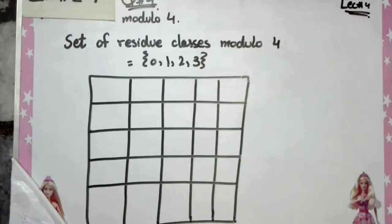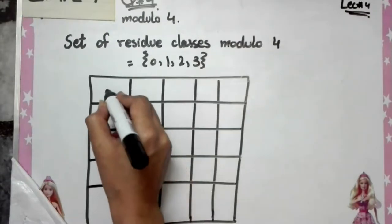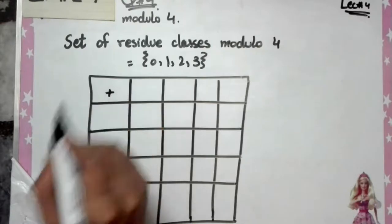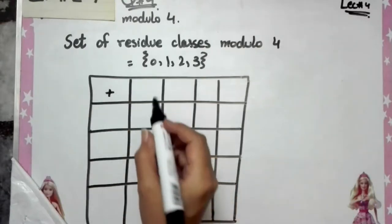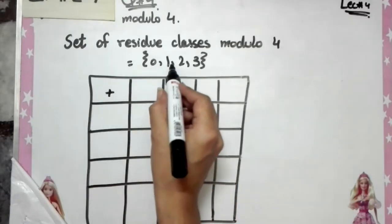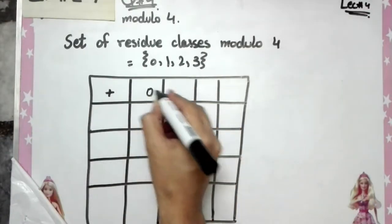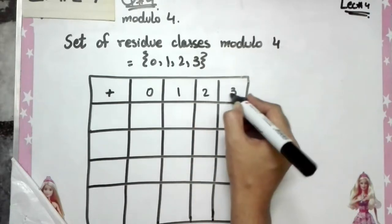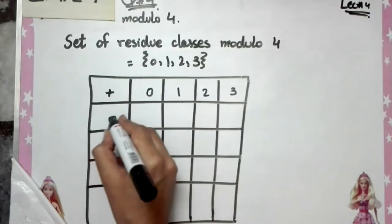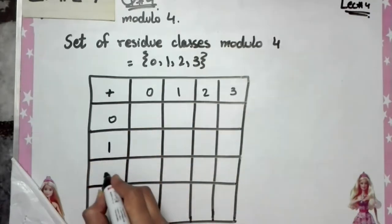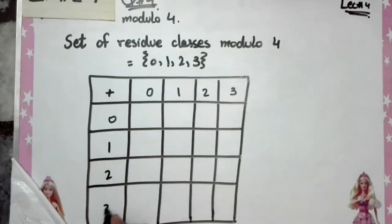We will make this table for addition, so we will put the addition symbol here. We will put 5 columns. The values across the top and down the side are 0, 1, 2, 3.